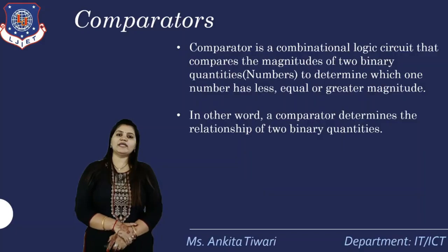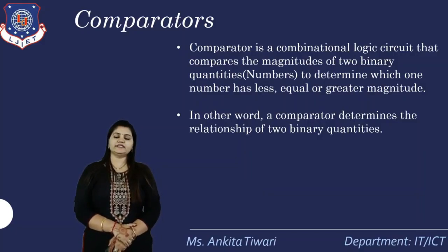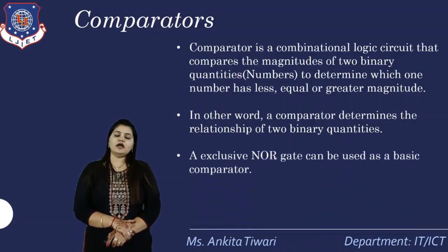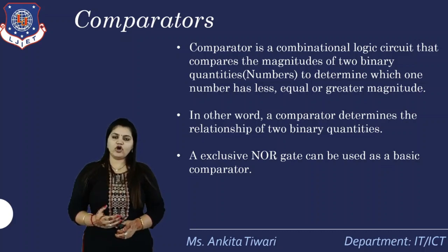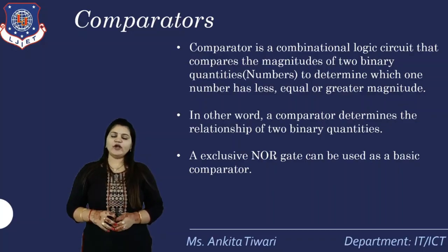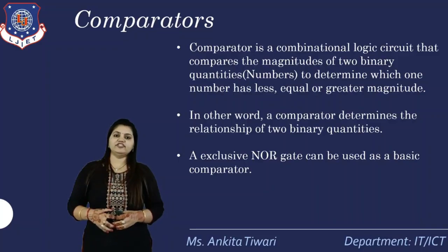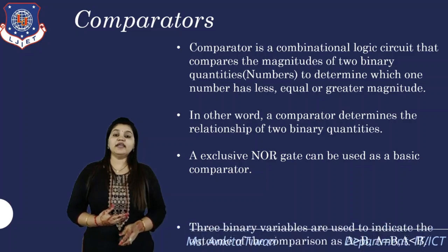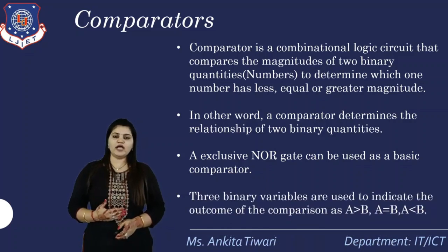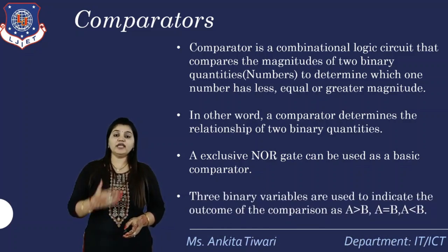In other words, a Comparator determines the relationship between two binary quantities. A Comparator output will have only two possible values: 0 or 1. Here, 0 indicates that the particular comparison is not applicable, and 1 indicates that the comparison being considered is true. We take three quantities to represent the three possible comparisons.